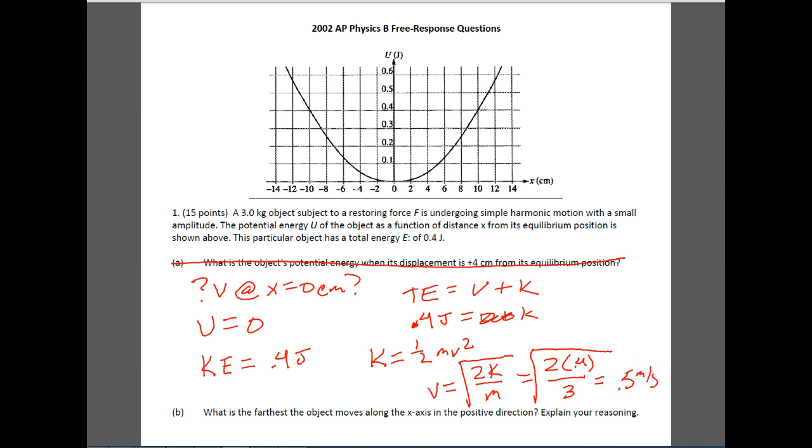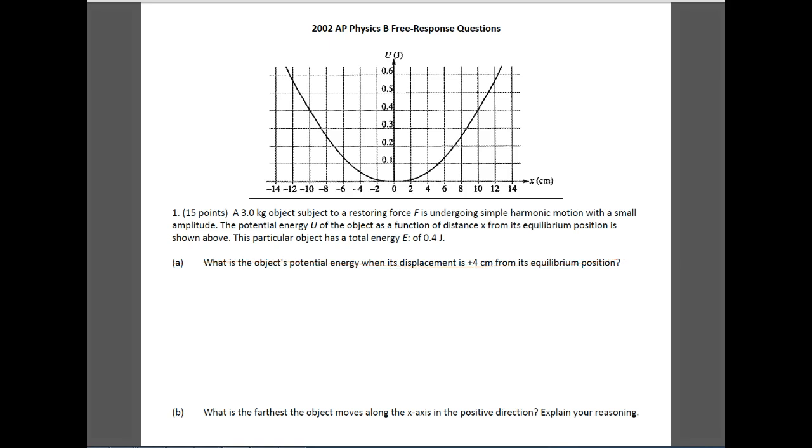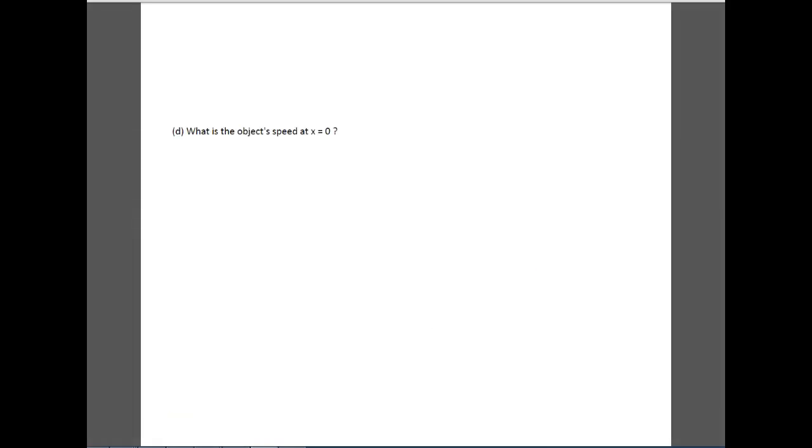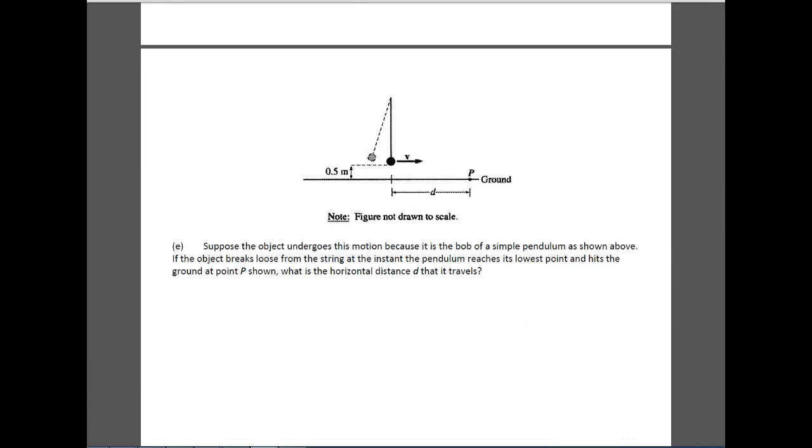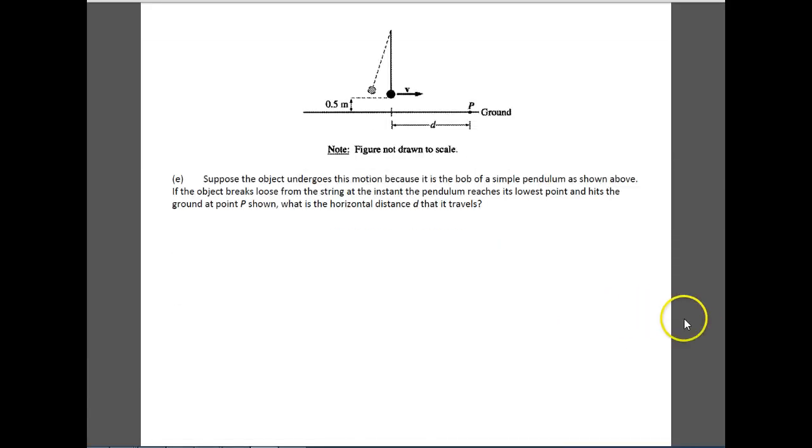For the very last part of this problem, they ask you something a little bit different. Now they tell you exactly what this thing is. So you could have cheated and gone, well, it's really not cheating. It's probably really smart to do. Go down to letter E. It says, suppose the object undergoes this motion because it is a bob of a simple pendulum shown above. If the object breaks loose, so if the object breaks loose right here, at the instant the pendulum hits the bottom, they want to know what is the distance left to right that it travels. So notice that this is 0.5 meters. So we're going to be able to use that 0.5 meters to kind of help us figure out how far it went.